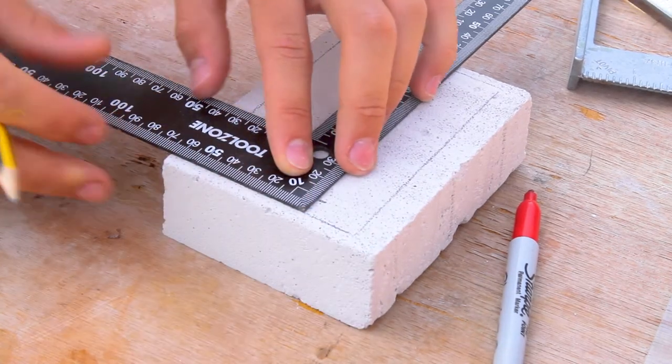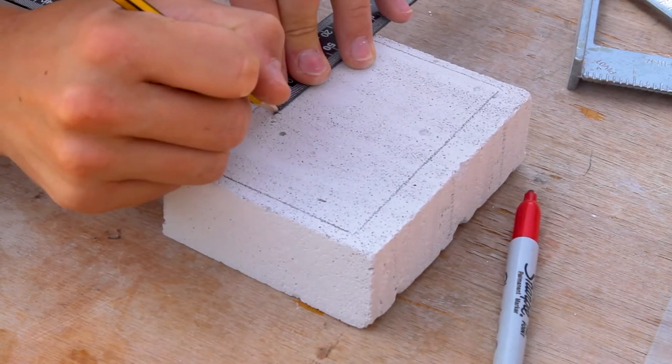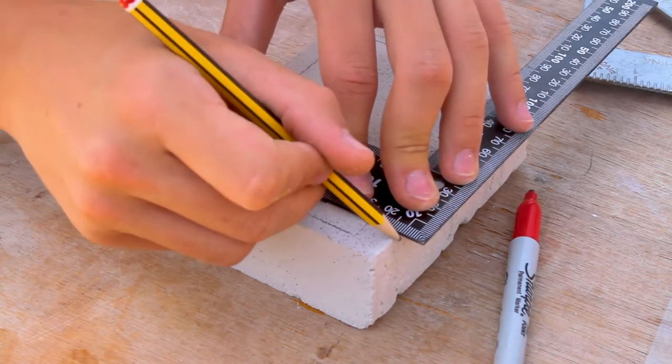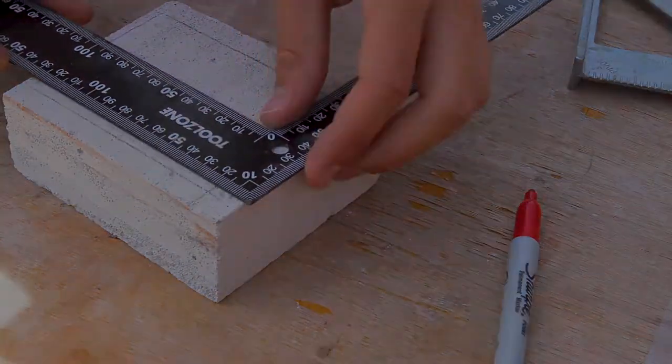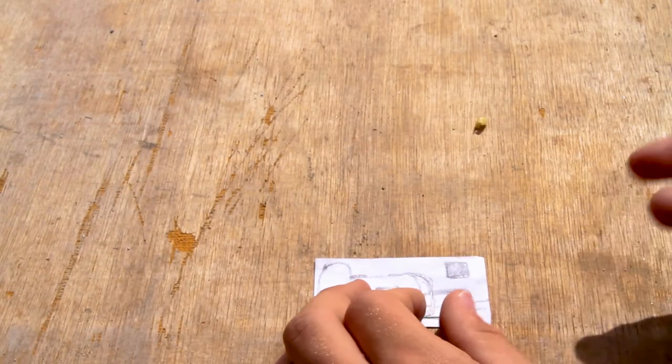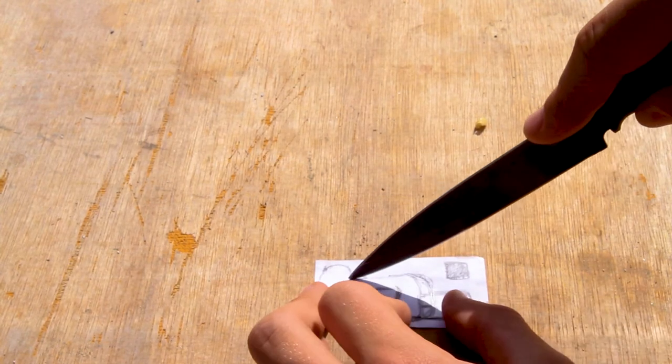Before we can start carving we need to create some boundaries so we know where the glass is. Simply trace out the glass onto the block, then create borders inside between half and a centimeter thick. This creates a safe zone so you don't accidentally carve greater than the size of your glass.